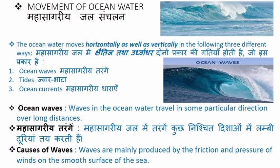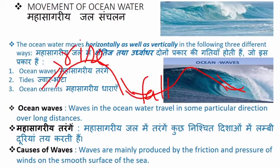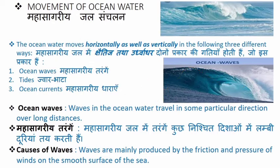Waves in the ocean water travel in a particular direction over long distances. Ocean waves are oscillatory movements in water, manifested by an alternate rise and fall of the sea surface. This means the waves rise (go up) and fall (go down) alternately. This also means that the water itself does not travel from one place to another; rather, a floating object on it shows movement — it moves up and down and to and fro. Suppose we place any floating substance — a cork, a wooden piece, or a bowl — in the water.